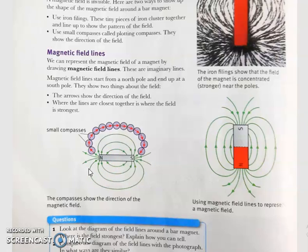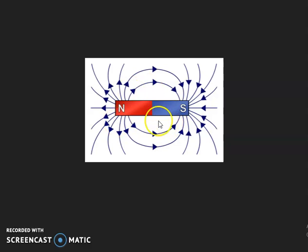As we move away from the poles, the magnetic field lines are no longer close together, which shows that the magnetic field strength is decreasing. Always the magnetic field lines move from north pole to south pole, and near the poles where the lines are closer, the field is stronger. As we move away from the poles, the field gets weaker.